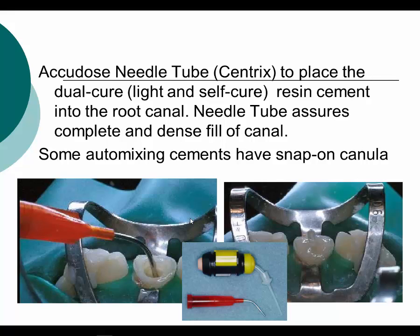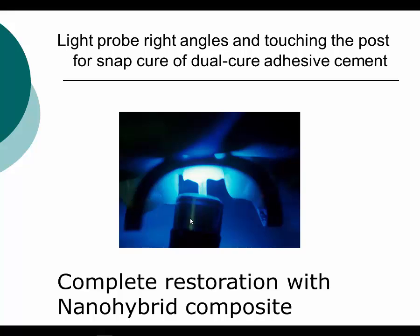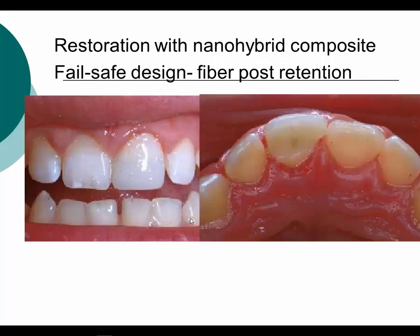I choose a composite resin cement — whether self-cure, dual-cure, or self-adhesive composite cement — and follow the manufacturer's directions. I prepare the canal, make sure it's dry, and place the cement within the canal using a thin cannula tip such as an Acudose needle from Centrix, or some cements have their own thin cannulas. You can even cement these posts using dual-cure composite core materials. I then light-cure — with a dual-cure resin cement, the light actually transmits through the fiber post to the end of the post. I complete the restoration with a nanohybrid composite resin to achieve an aesthetic result.